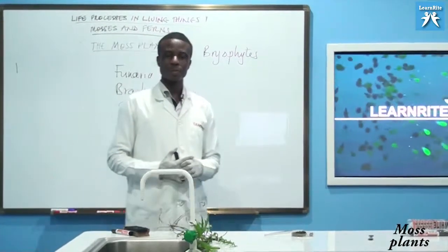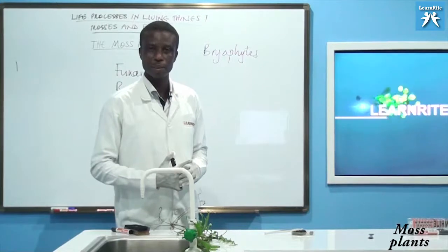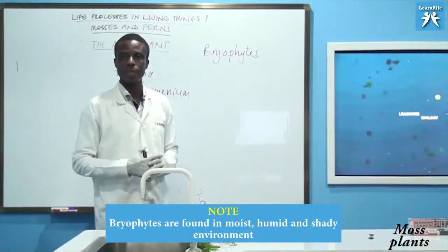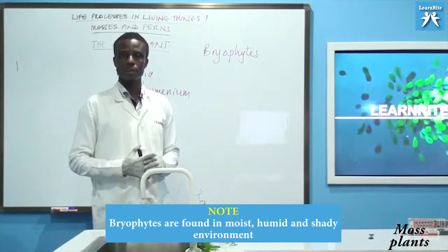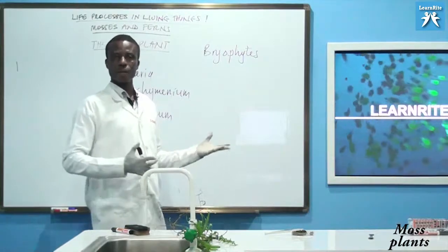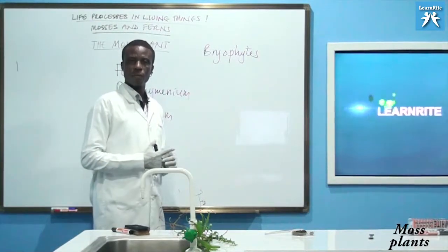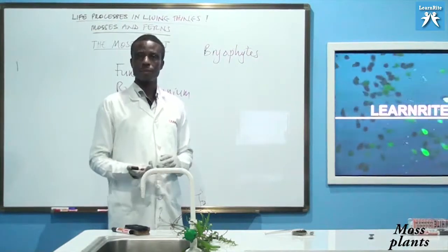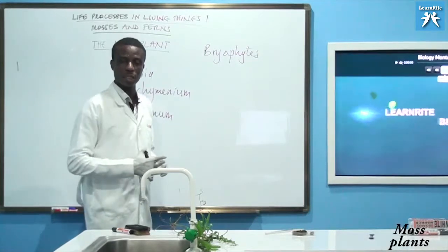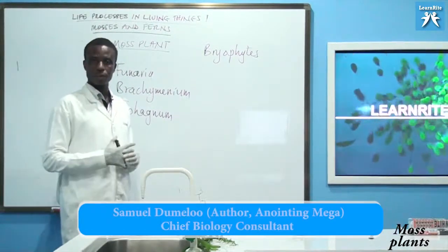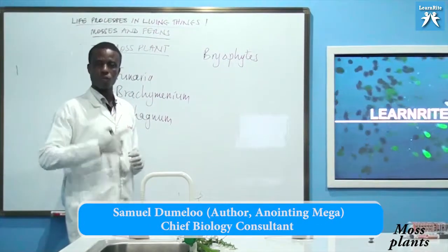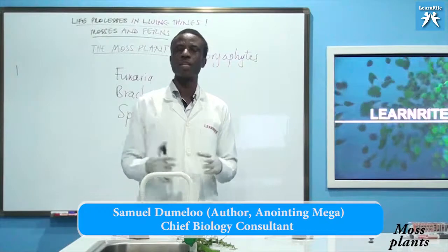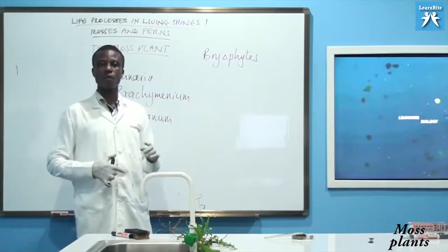Welcome back to the lab. Where can you find a bryophyte? As you saw in the field sketch, bryophytes are found in moist, humid, and shady environments — maybe on the forest floor or on decomposing material. Because of the lack of cuticle, which is in turn due to the absence of vascular tissue, moss plants are found in moist, humid, and shady environments. That is the habitat of moss plants. Join me in the next video where we look at the structure of a moss plant.